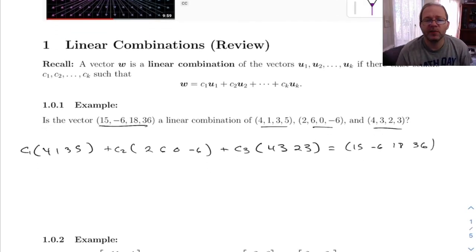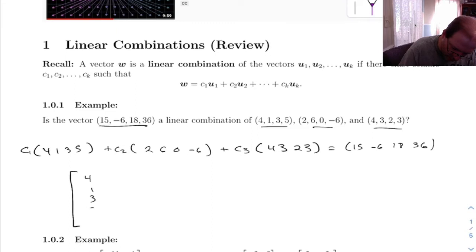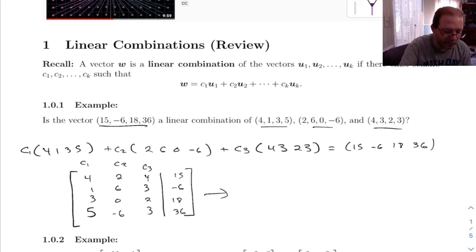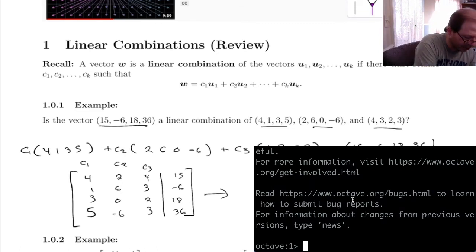But really, when you go to solve this, what you want to do is write this as an augmented matrix. So we get this for the C1 column. C2 column is going to be (2, 6, 0, -6). C3 column is going to be (4, 3, 2, 3). And then we get (15, -6, 18, 36). So what we've got to do is solve this system. And of course, the quickest way to do that is to type it into Octave.